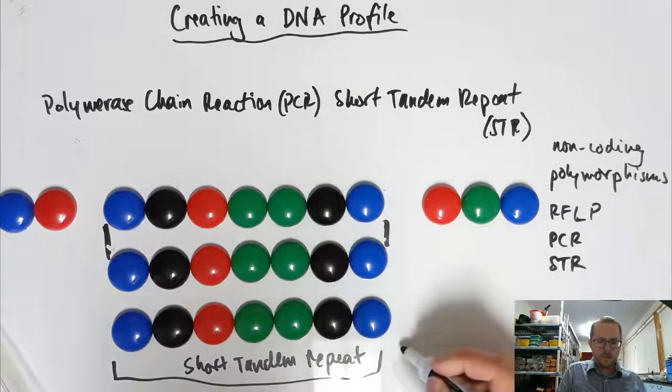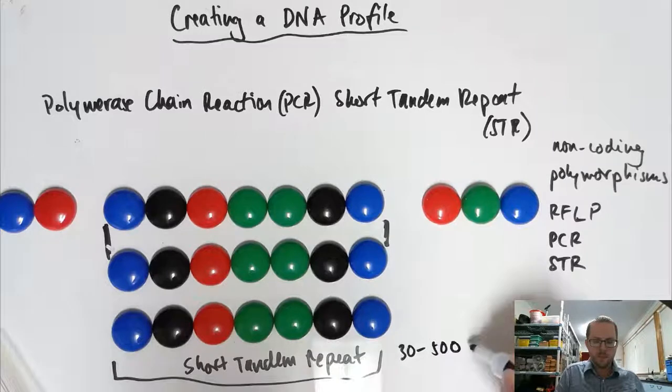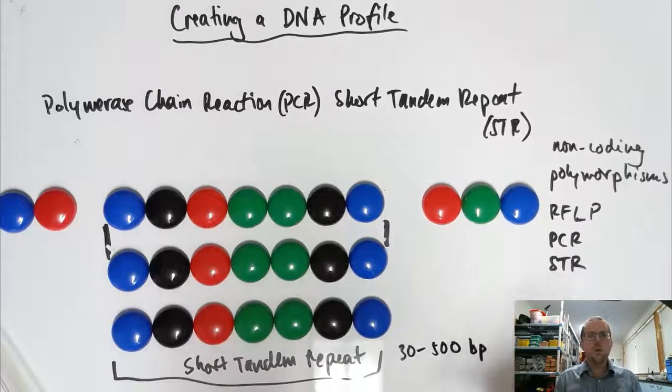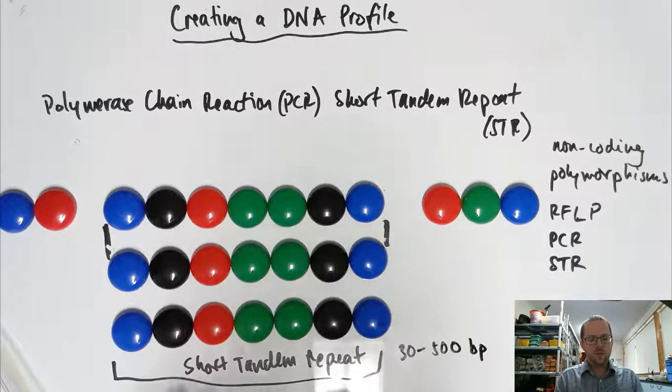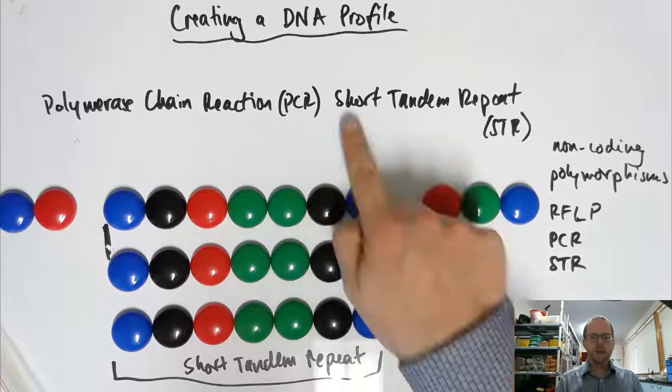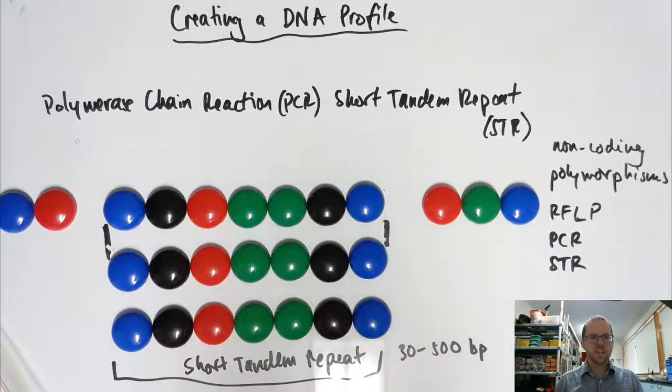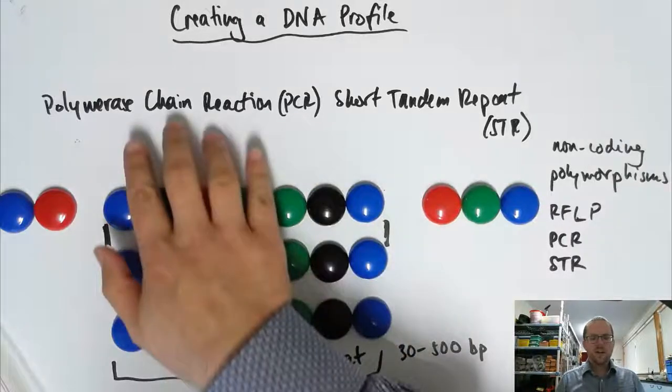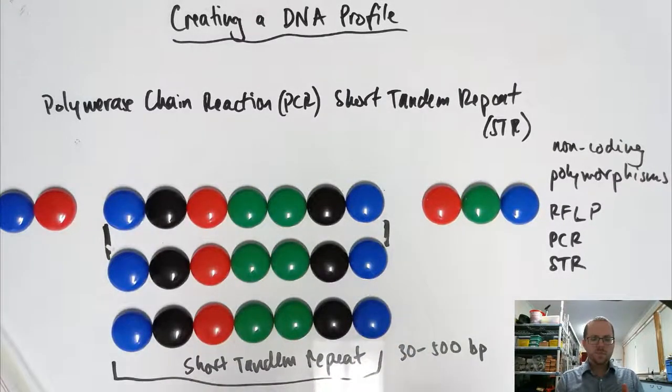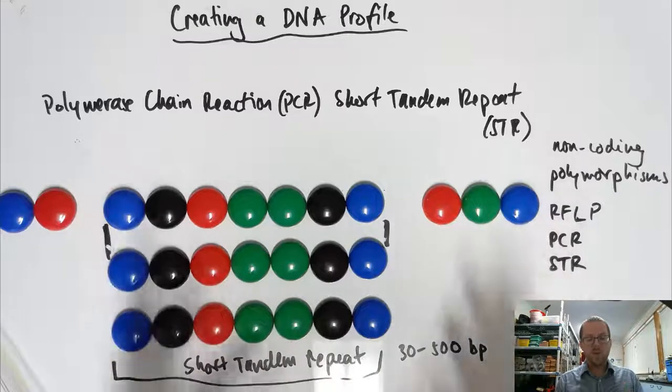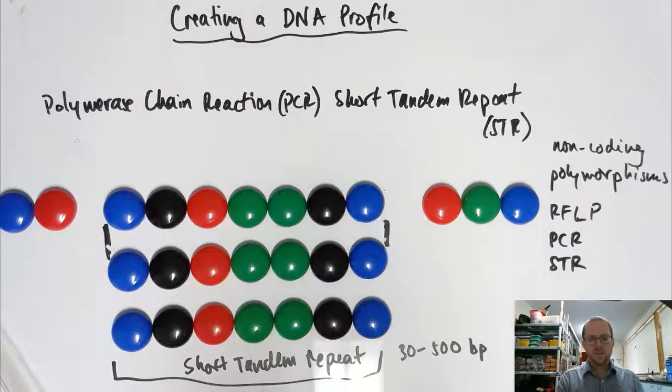So we're thinking about it being 30 to 500 base pairs long, so it's quite short as these sections go. But they're highly variable, they're at well-known loci. So they're really successful for us to be able to analyze using this technique. We're able to identify a specific type of polymorphism that's really useful. We're able to use one technique that we can use to amplify the sample that we have ready for testing. So this is the sort of technique that we need to be familiar with at this point.